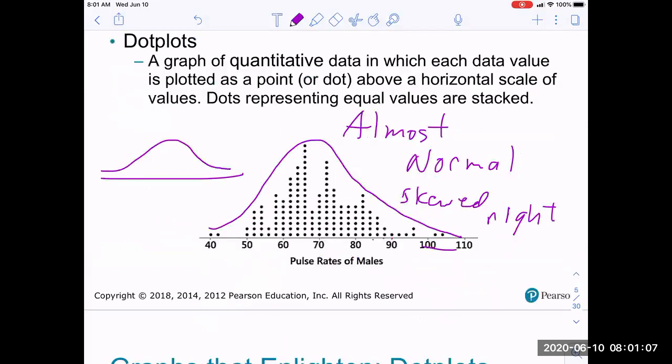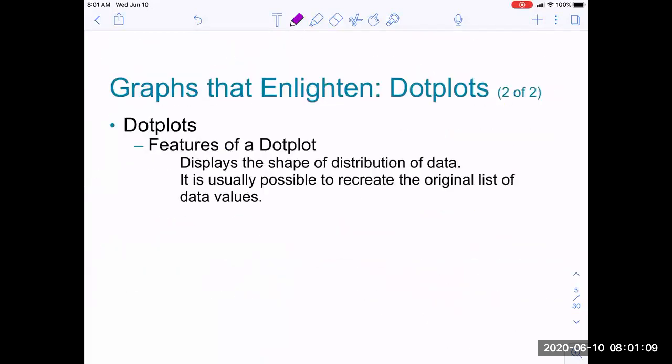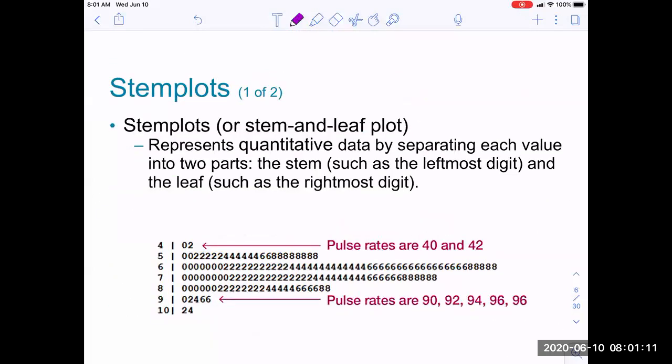Another graph that we use a lot is a stem plot. Notice here you can recreate the original data. For example, here in the 40s you can see that's a 40 and a 42. So this is the stem and then these are the leaves. So a stem and leaf plot you may have seen before.